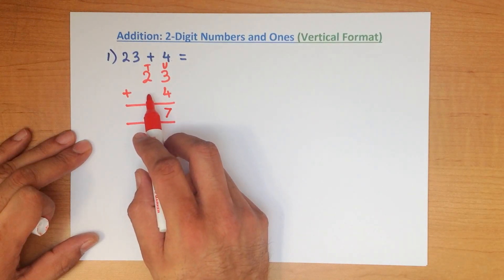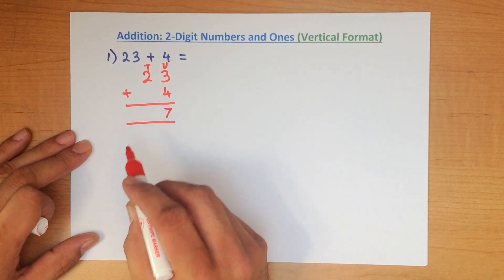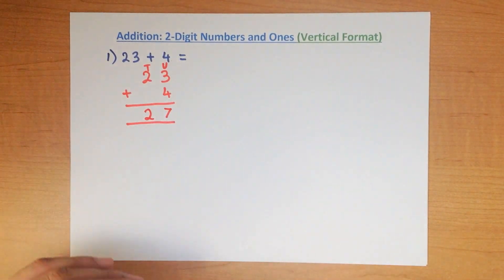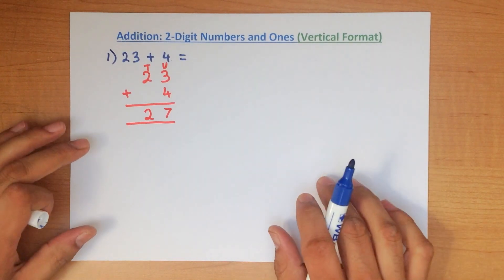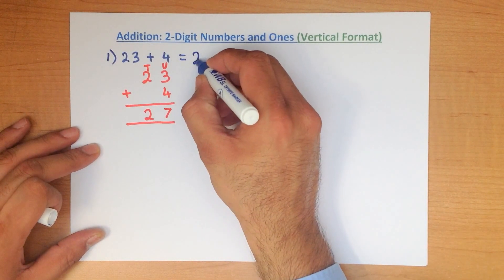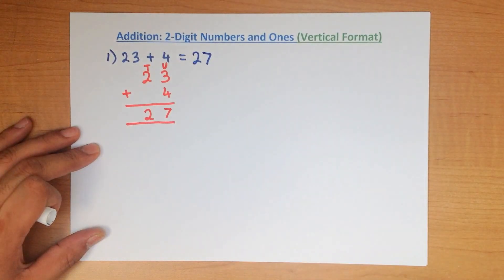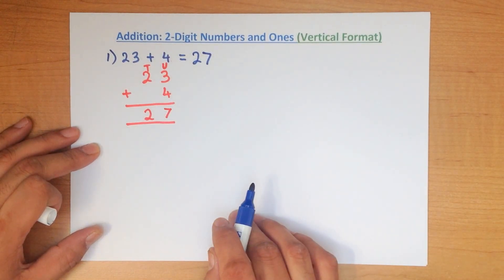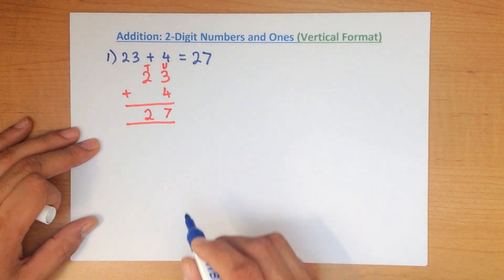We now add the tens. 2 plus 0. There's nothing here. And that is 2. So 23 plus 4 is 27. You can actually count up from 23 and you will get the same answer, 27.